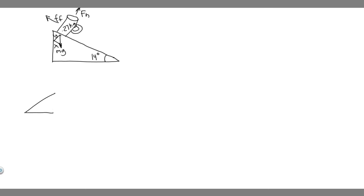The way we find those components is by drawing a triangle. mg is the hypotenuse of our triangle, and this angle is the same as the angle of the incline — that's just something you have to know — so this is 14 degrees. We're trying to find the x component, which is opposite the angle, and the y component along the y-axis.